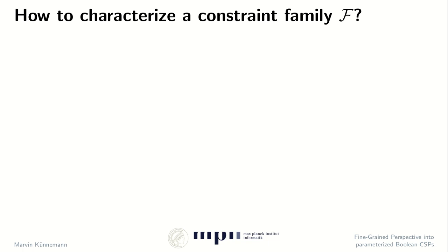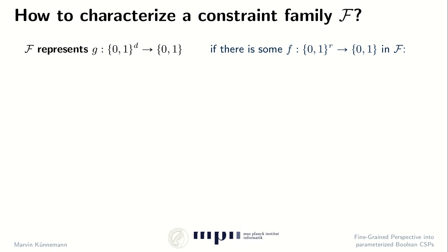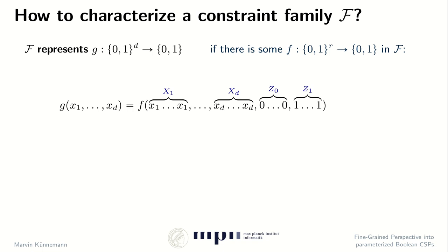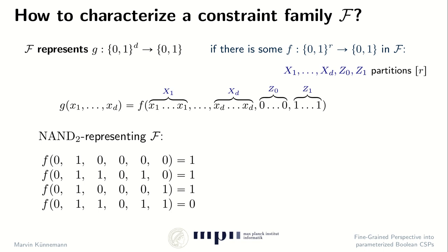In order to describe which constraint satisfaction problems have which complexity, we use the following notion. We say that a constraint family f represents some gadget function g if the following is true: we can take some function f from our constraint family and then plug in variable arguments of our gadget function g to represent this function g. In particular, we can partition the arguments of my constraint function f into sets — one for each argument of g — and two sets for the constant zeros and ones, and then by setting the values accordingly, we can represent g. Let me give an example for a binary NAND representing constraint family f.